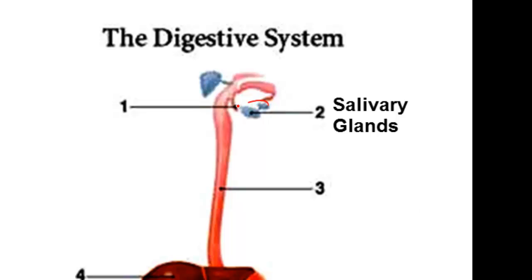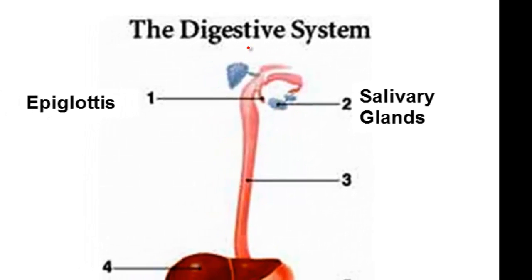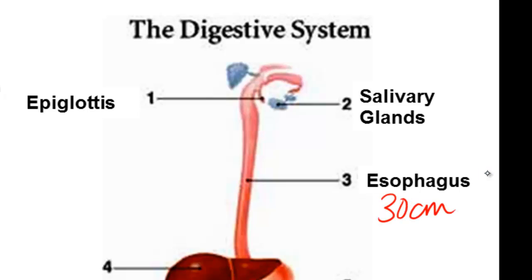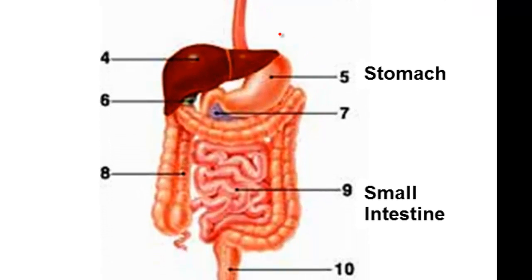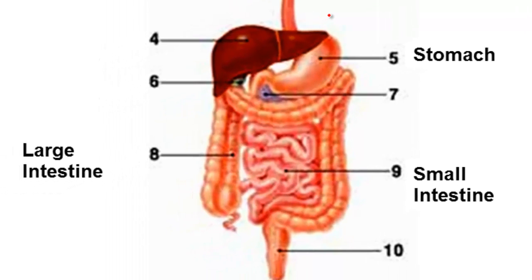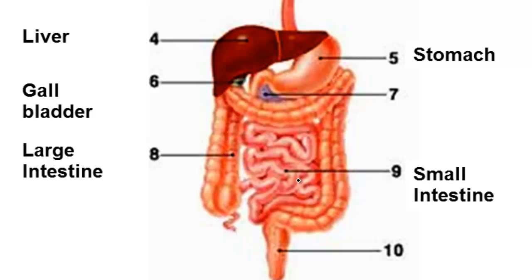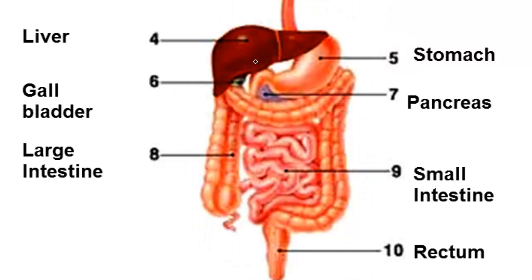Let's talk about all the parts of the digestive system. We've got our salivary glands, which make saliva. We've got our epiglottis, which covers the trachea when we swallow so food doesn't enter our lungs. We've got the esophagus — a 30-centimeter-long tube that takes food from the back of the throat to the stomach. The stomach churns food and starts protein digestion. The small intestines, where most digestion and absorption occurs, lead into the large intestines, which absorb water and salts. We also have the liver, gallbladder, pancreas, and the rectum, which takes undigested waste out through the anus.